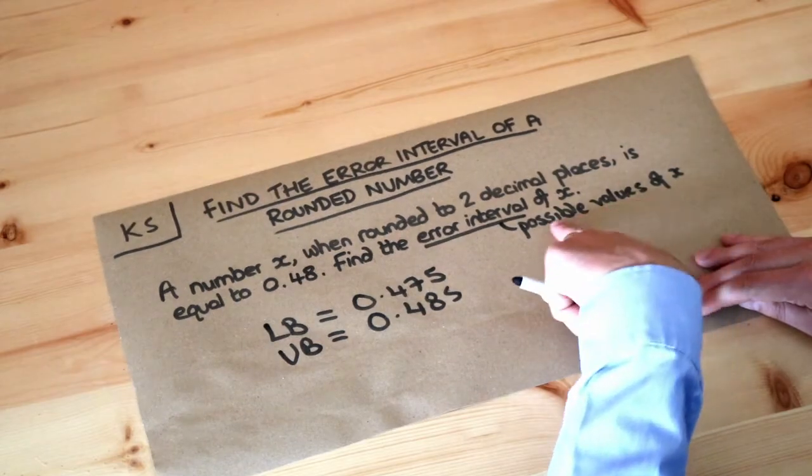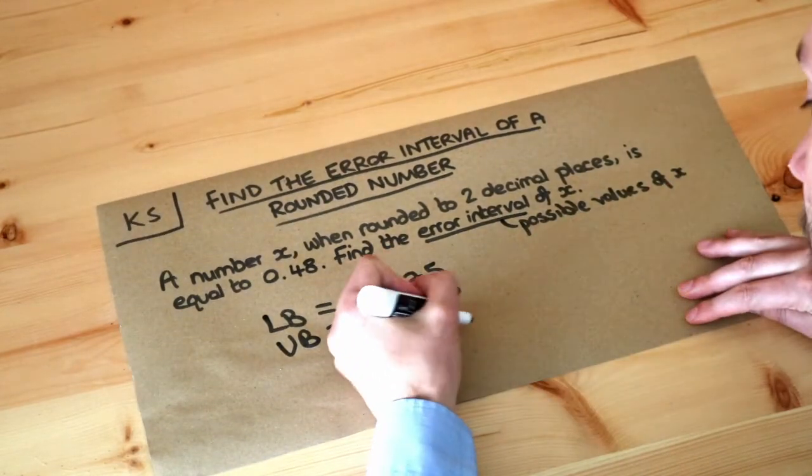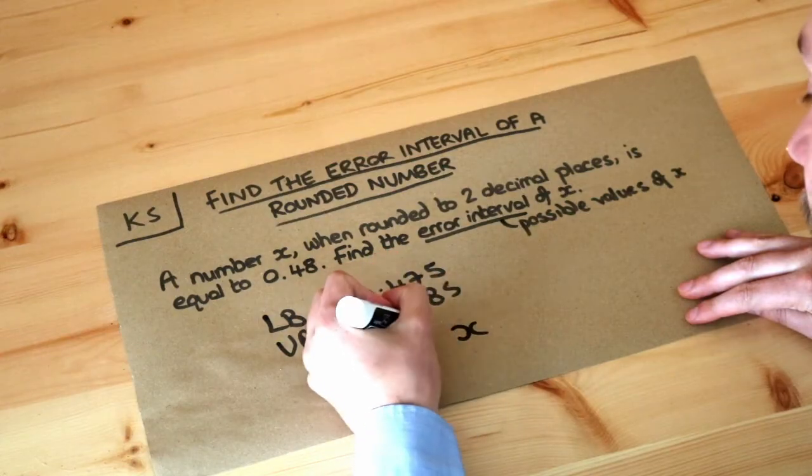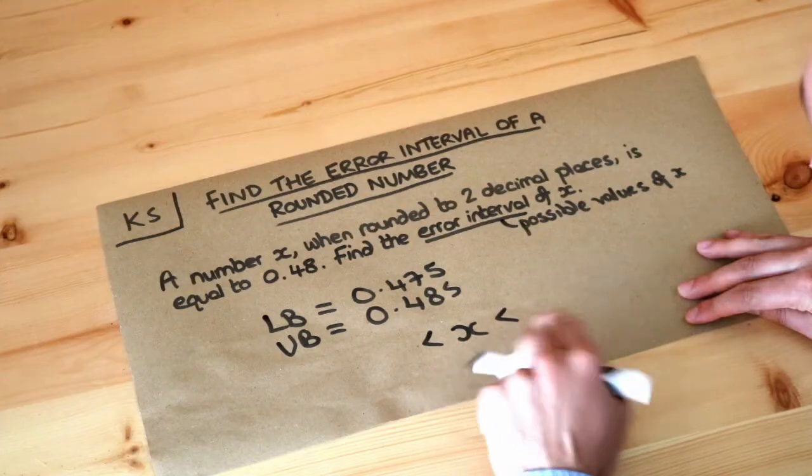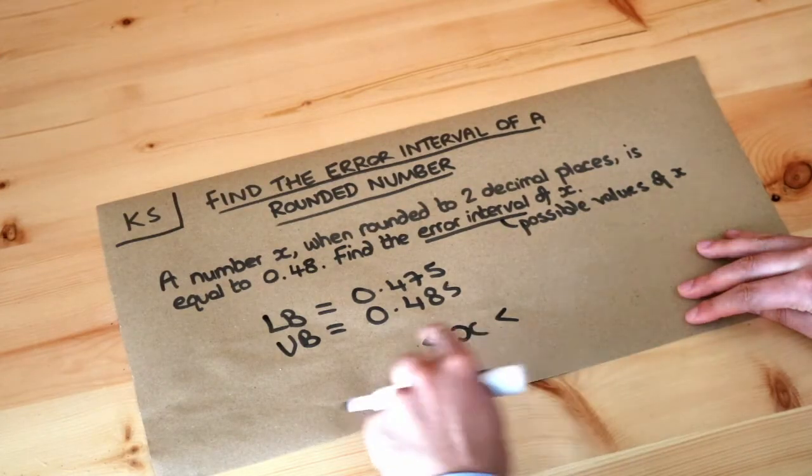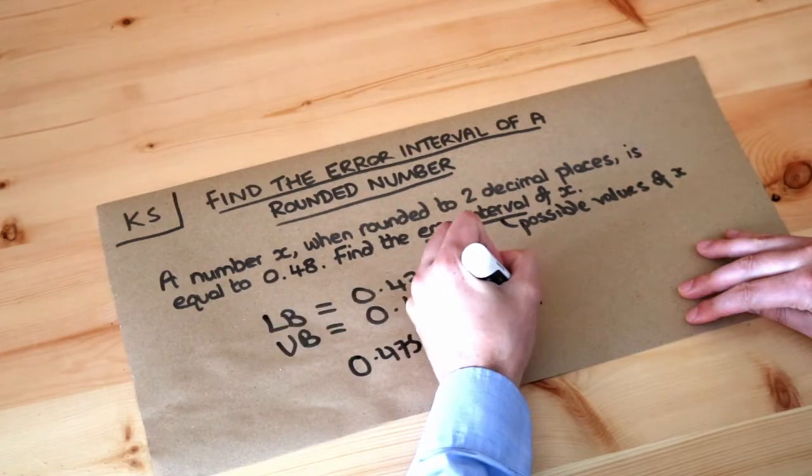Now if we want the possible values of x, the error interval of x, we can do that with an inequality. So we're going to say that x is between, and I'll worry about exactly whether these are less than or less than or equal to in a second, x is somewhere between 0.475 and 0.485.